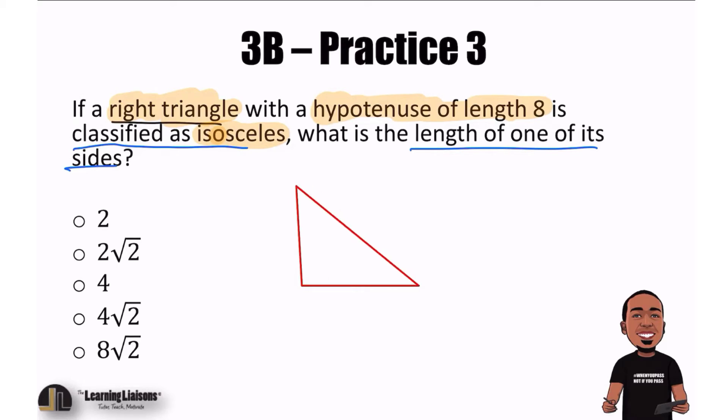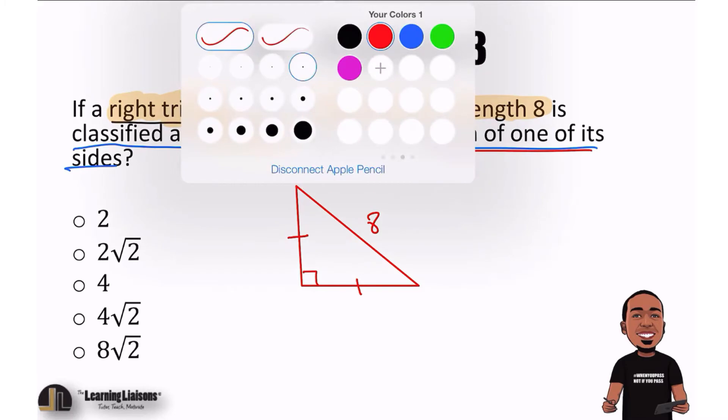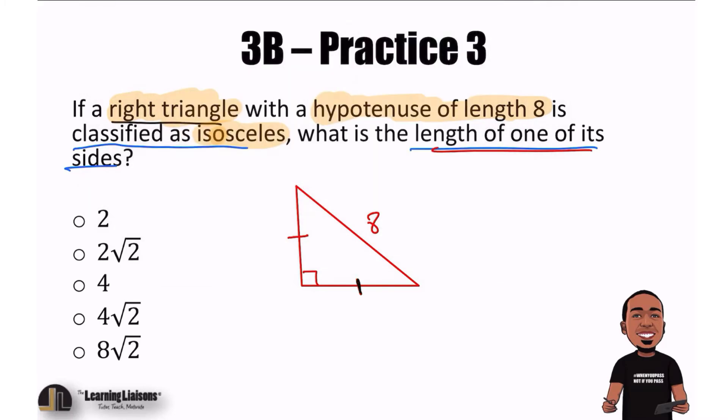I can go ahead and just draw a brand new triangle, a right triangle, and make it look isosceles. So, something along the lines of this. And so, again, we're saying that this side and this side are the same, and my hypotenuse is 8. So basically, I'm looking for one of the sides. And if they're the same size, if they're congruent right here and here, well, I can just name them something. I'll pick a letter. I'll just use A.